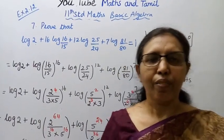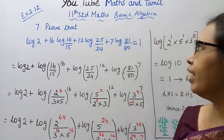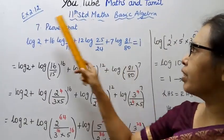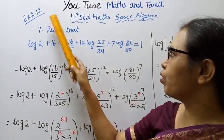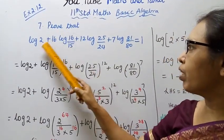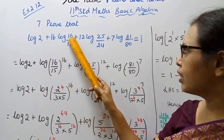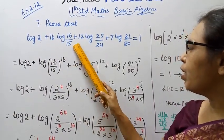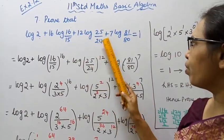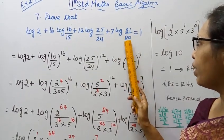Hello students, welcome to Max and Tamil channel. 11th standard, Max basic algebra, Exercise 2.1, 7th sum. Prove that log 2 plus 16 log(16/15) plus 12 log(25/24) plus 7 log(81/80) equals 1.